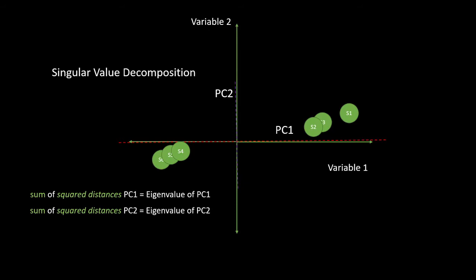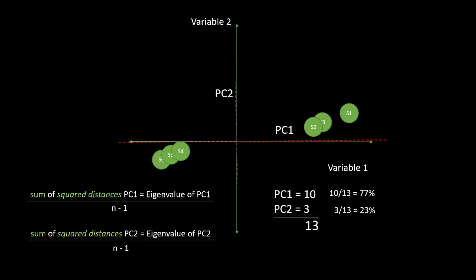Next we plot all the PC1 and PC2 values on the line. Once we do those plots, the points are assigned to PC1 and PC2. We then rotate so that PC1 is horizontal and PC2 is vertical. From there we use the samples to find the PCA plots. Taking one sample, I match it up and find the data point — this will be S6, and so on. All data points get plotted onto our two-dimensional graph. This creates the idea of singular value decomposition. The sum of squares distance for PC1 is the eigenvalue of PC1, and same for PC2.